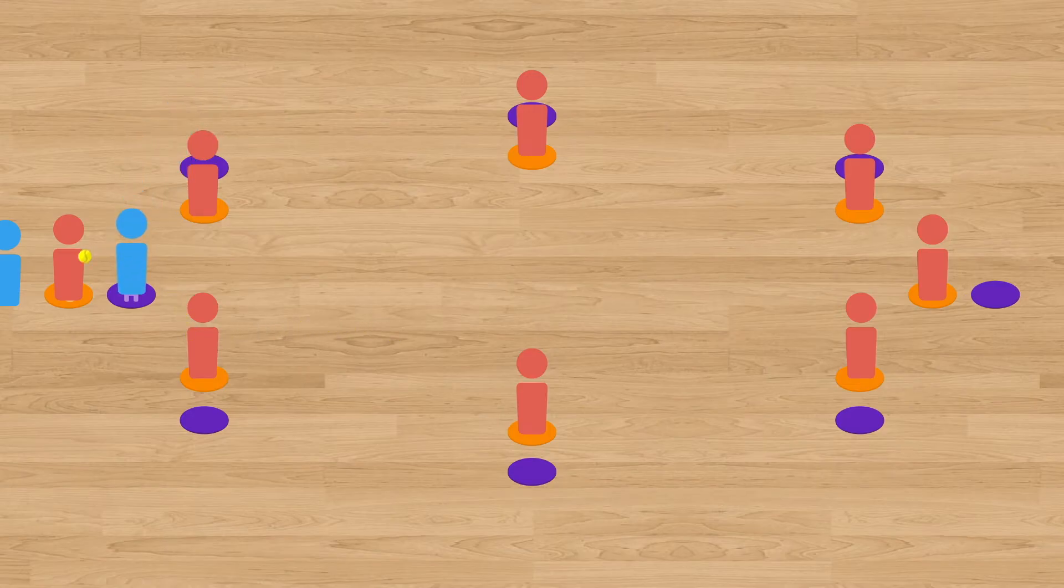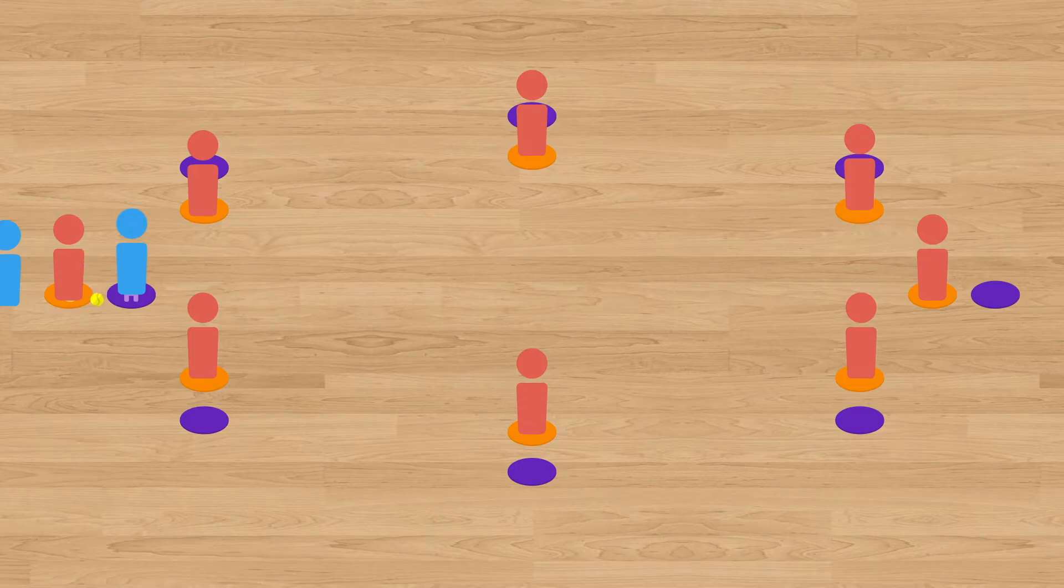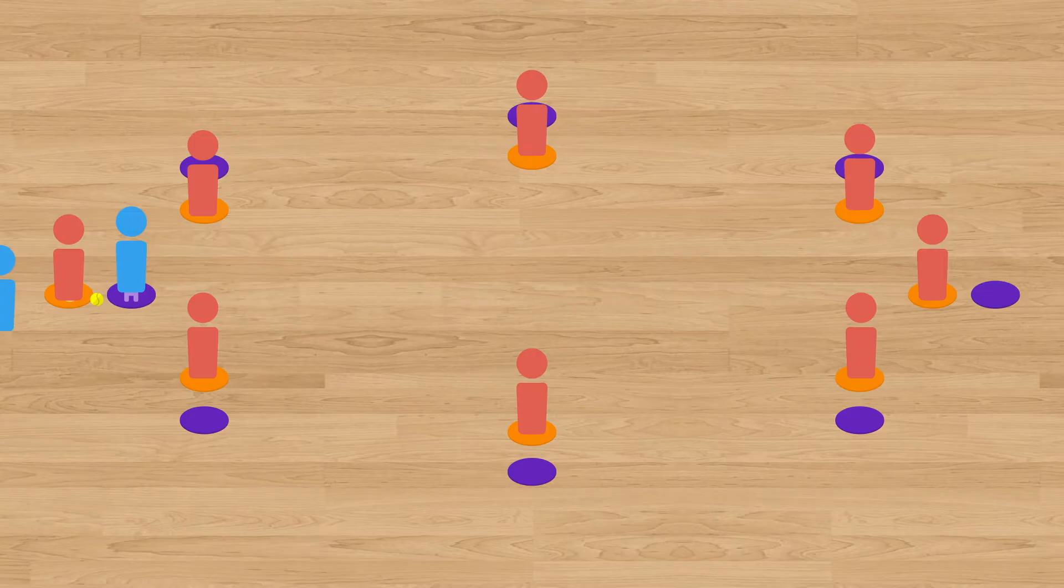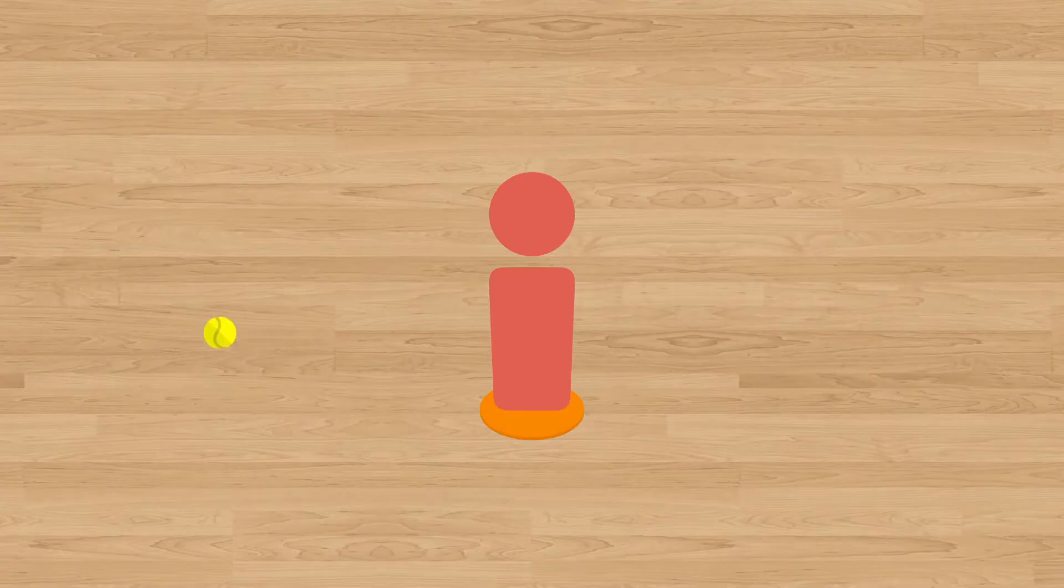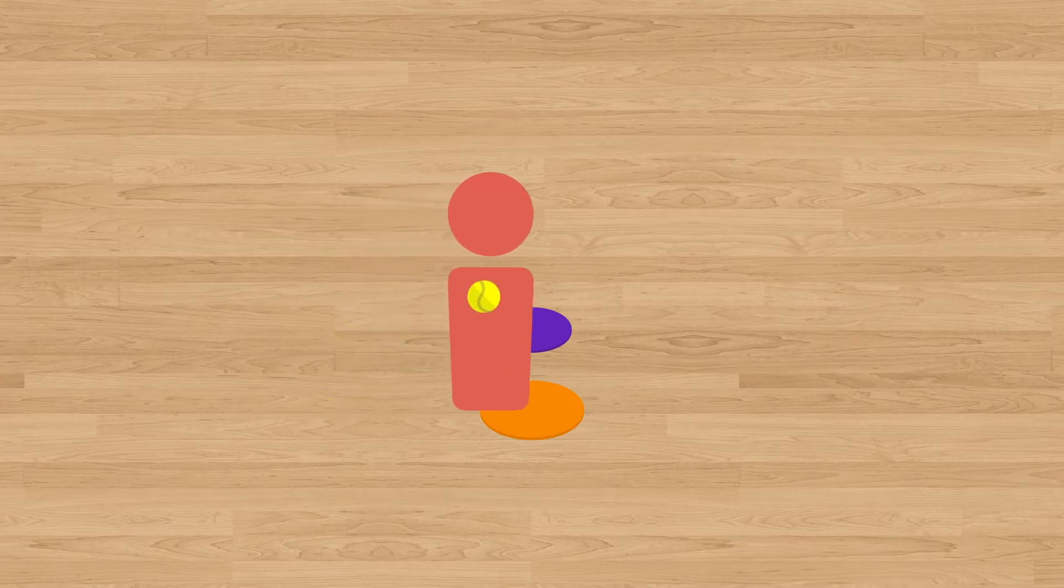If the batting team player makes it around the bases before the ball, they score a point for their team, and the next player steps up to home plate. In between each turn, the entire fielding team has to find a new base. It's important for the fielding team players to know that they have to have at least one foot on their base before they are allowed to throw the ball to the next player.